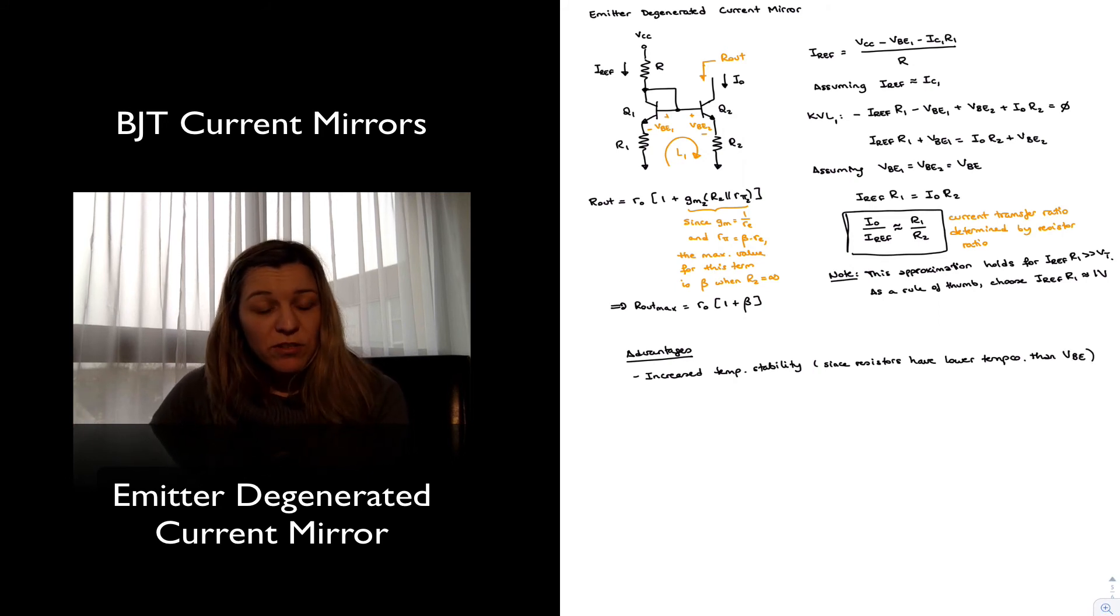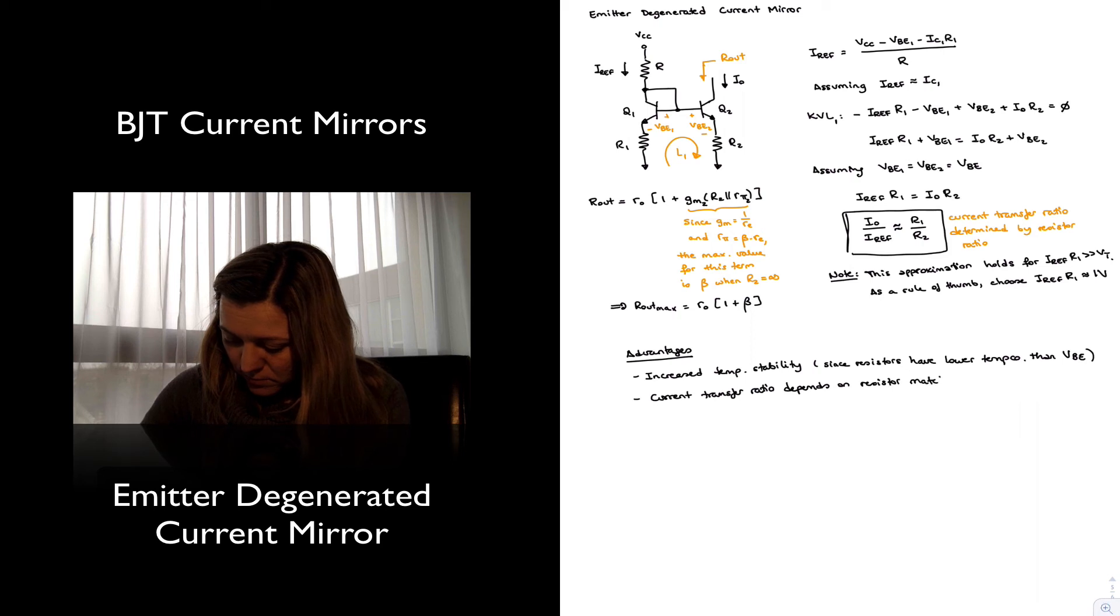Resistors also have a positive temperature coefficient, whereas VBE has a negative temperature coefficient, and so there is even some compensation there. And then the current transfer ratio depends on resistor matching rather than transistor matching.